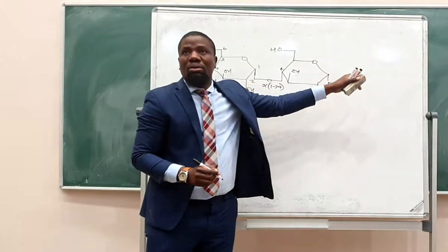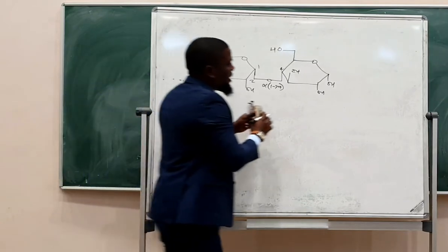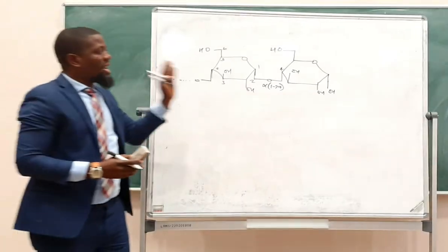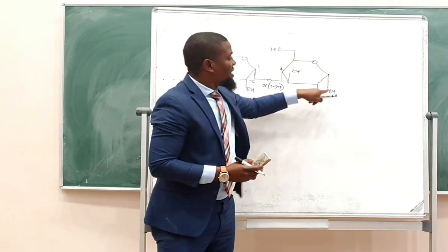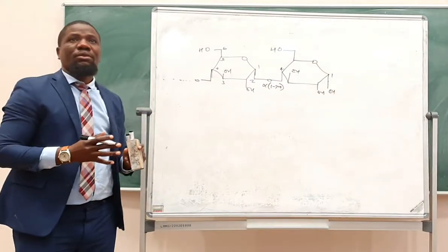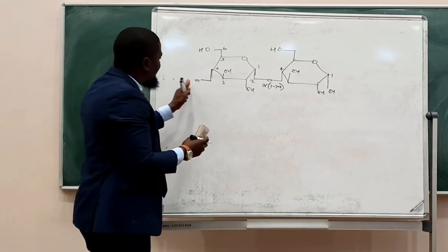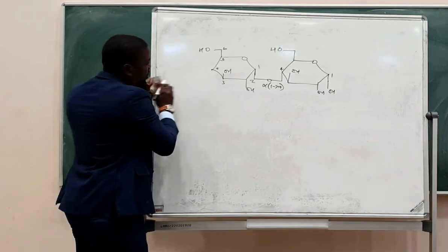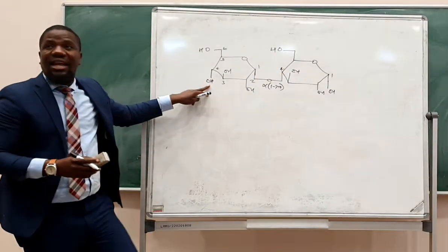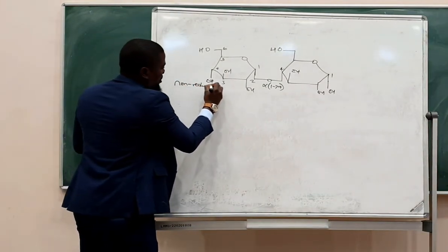The chain continues such that you would have other glucose residues extending until it makes a long chain. At one end you have a hydroxyl group around the anomeric carbon — this end is referred to as the reducing end. Then there is the other end which has a free hydroxyl group at carbon number 4 — this end is referred to as the non-reducing end.